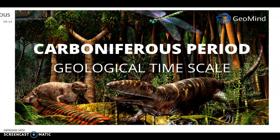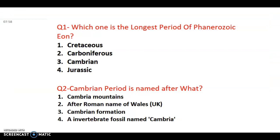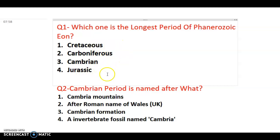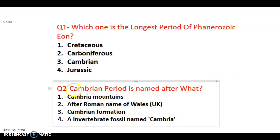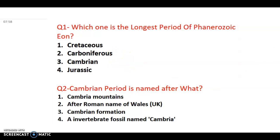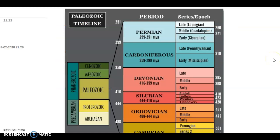These are the amphibians, so the Carboniferous period is also known as the age of the amphibians. From now onwards I will include two daily questions in my video. First question: which one is the longest period of the Phanerozoic Eon — Cretaceous, Carboniferous, Cambrian, or Jurassic? Second question: the Cambrian period is named after what — the Cambria Mountains, the Roman name of Wales (UK), Cambrian formation, or the invertebrate fossil name Cambria? Please comment your answers below.